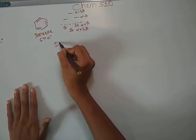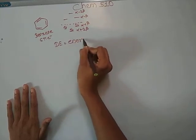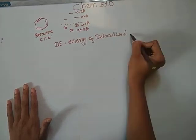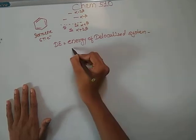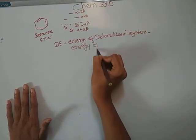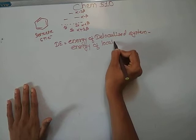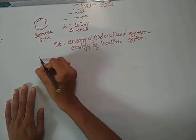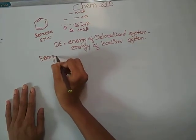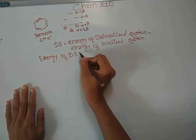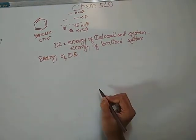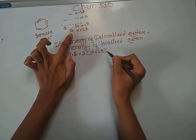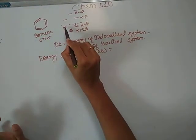The delocalization energy is equal to the energy of the delocalized system minus the energy of the localized system. For benzene, the energy of the delocalized system is equal to 2 × (α + 2β) plus four electrons giving 4 × (α + β).